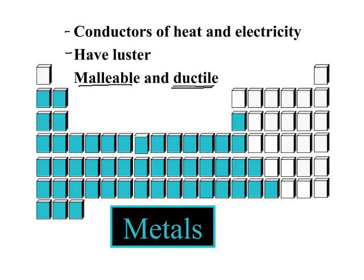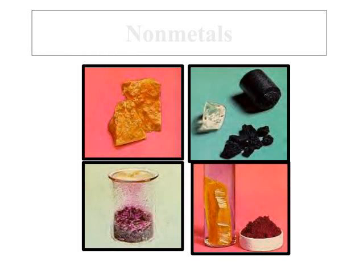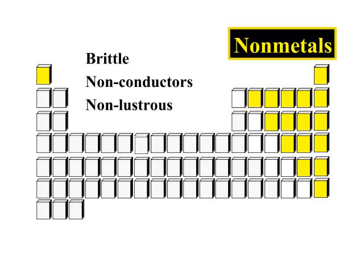You can see that metals make up almost all of the periodic table. Your nonmetals have properties just about the opposite of metals. Nonmetals are brittle, they are nonconductors, and nonlustrous. So your nonmetals, located to the right of that stair-step line and including hydrogen, have properties opposite of your metals.